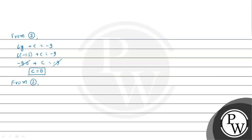From equation 2, we have 4f + c = -4. Since c = 0, this becomes 4f = -4, so f = -1. Therefore our values are: g = -1.5, f = -1, and c = 0.